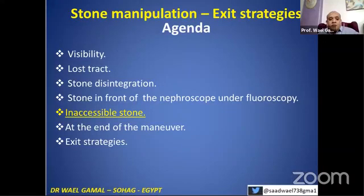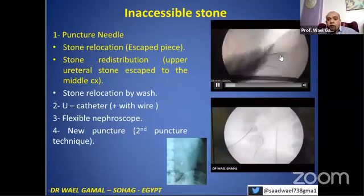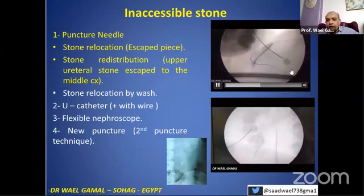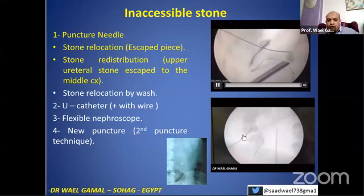Sometimes there is an inaccessible stone. There is a staghorn stone and at the end a piece escapes. You can use your needle to manipulate the stone — to return it to the pelvis, pushing it from outside to be in front of the nephroscope.